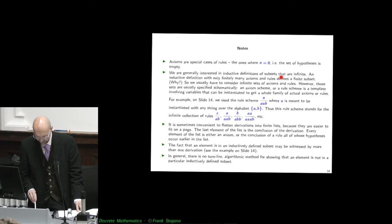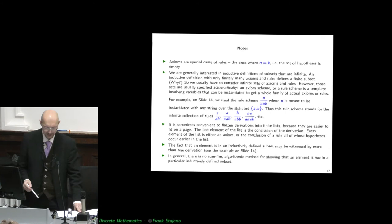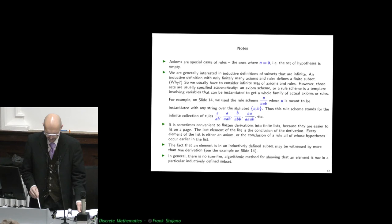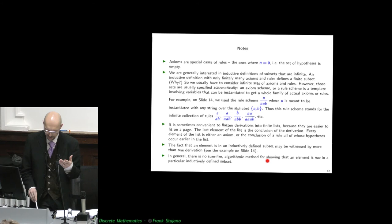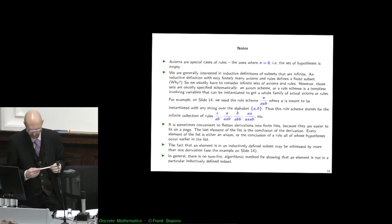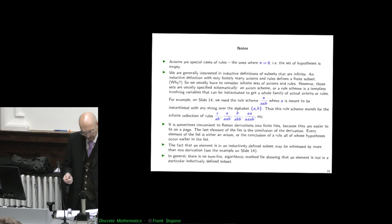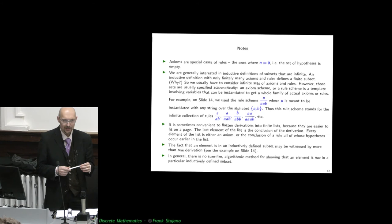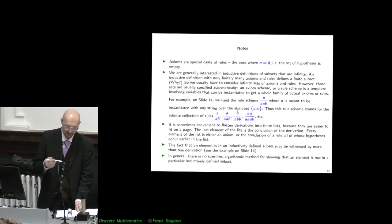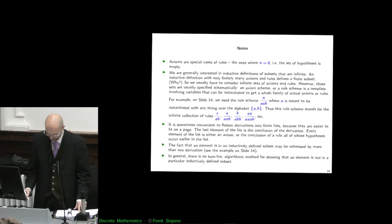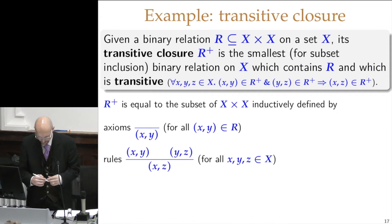We are generally interested in inductive definitions of subsets that are infinite. An inductive definition with only finitely many axioms and rules, without syntactic variables, would define only a finite subset. In general, there is no surefire algorithmic method for showing that an element is not in a particularly inductively defined subset. It's very easy to prove that all strings in the subset have the same number of A's and B's, but it is not so easy to prove the reverse direction.